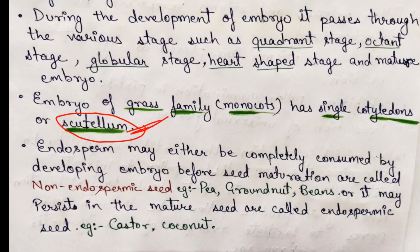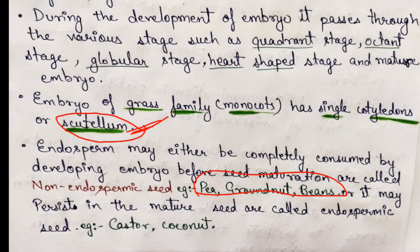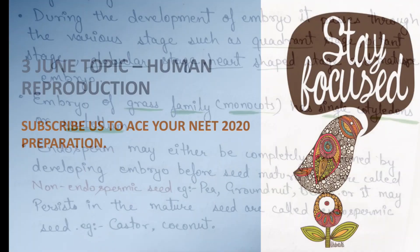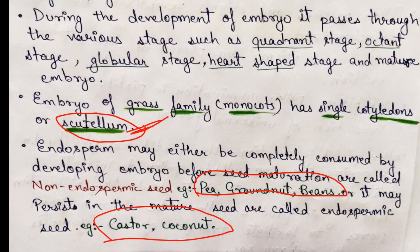Endosperm may be completely consumed by the developing embryo; seeds where endosperm is absent at maturity are called non-endospermic seeds. If the nucellus tissue persists in the mature seed, it is called perisperm, and it is found in black pepper — remember this example.